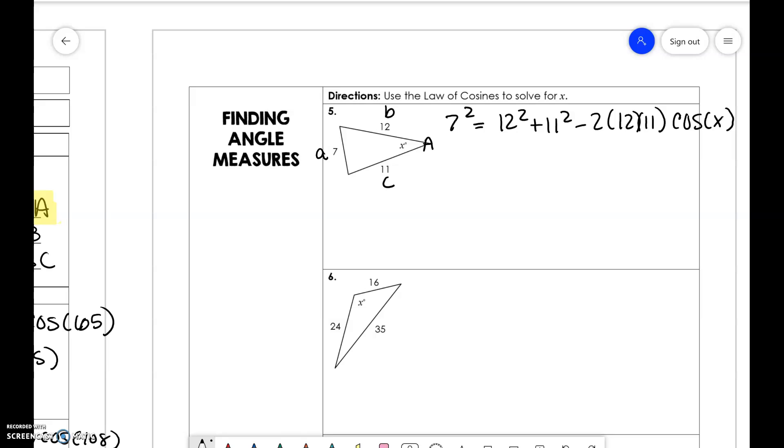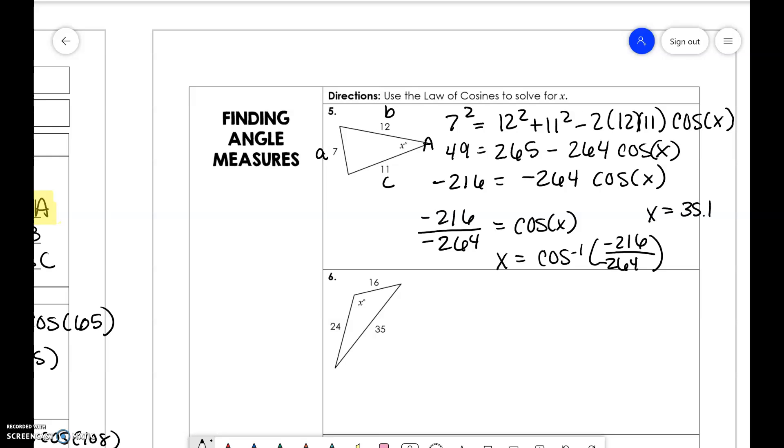So what we would do is we would just simplify this and solve. So 49 is equal to 265. So we would say negative 216 over negative 264 is equal to cosine of x. And just like in previous problems when we had to figure out what cosine of x is, we need to do x is equal to cosine inverse of negative 216 over negative 264 to get x is 35.1 degrees.